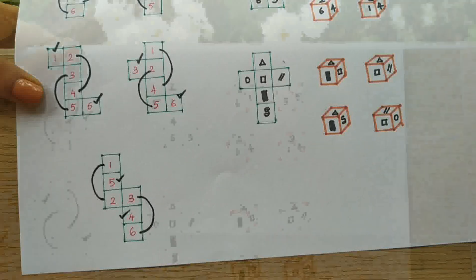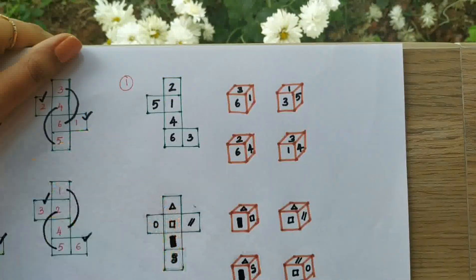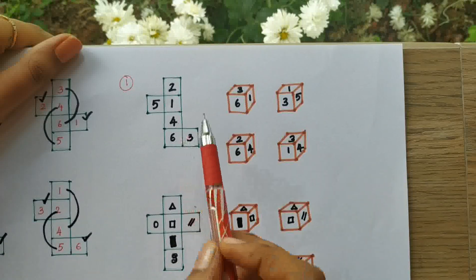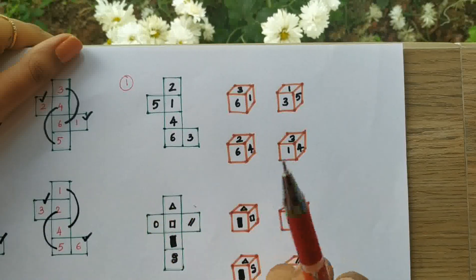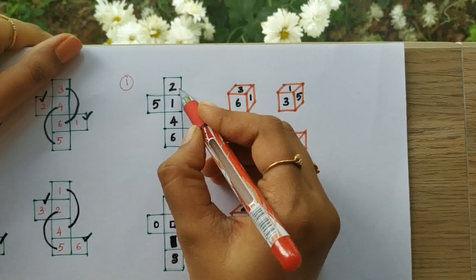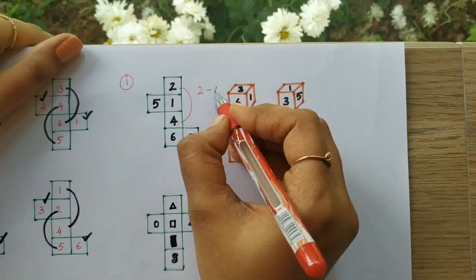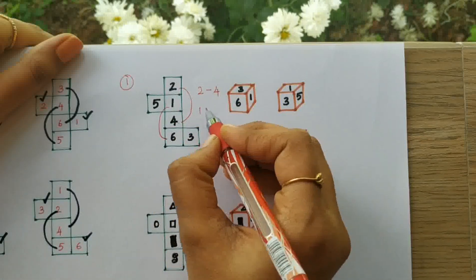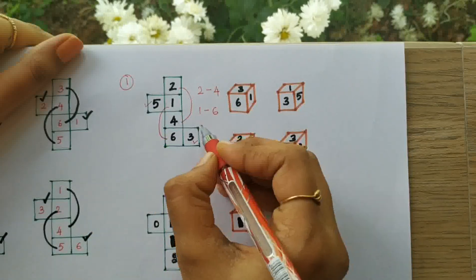Let's try our first question: identify which cube can be formed from this unfolded net. First, let's find the opposite numbers. We can see two is opposite to four, one is opposite to six, and five is opposite to three.